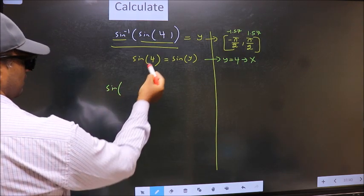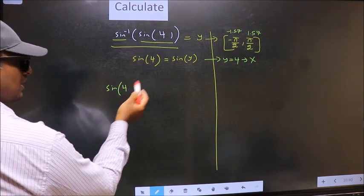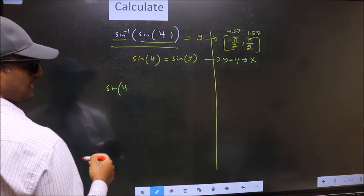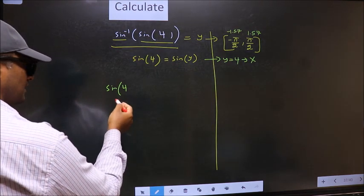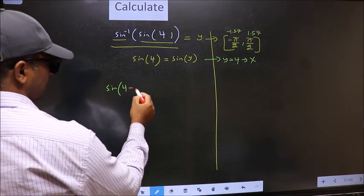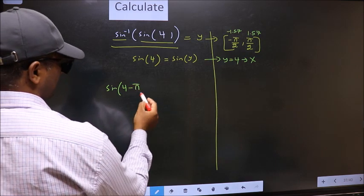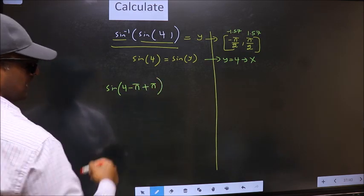Sin 4 does not lie in that interval, so I should decrease it. To decrease I subtract pi. Now whatever we are subtracting we should also add the same thing.